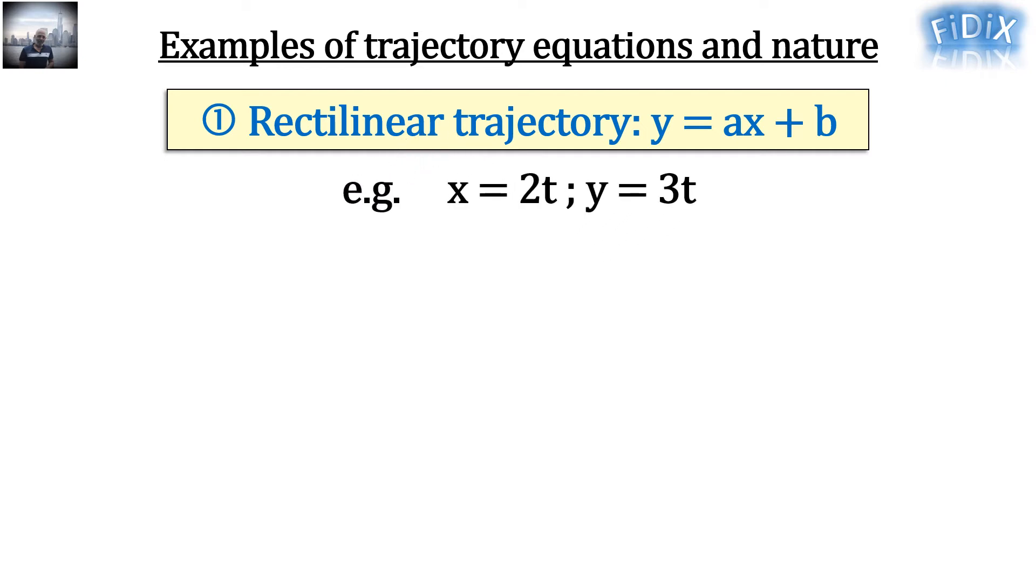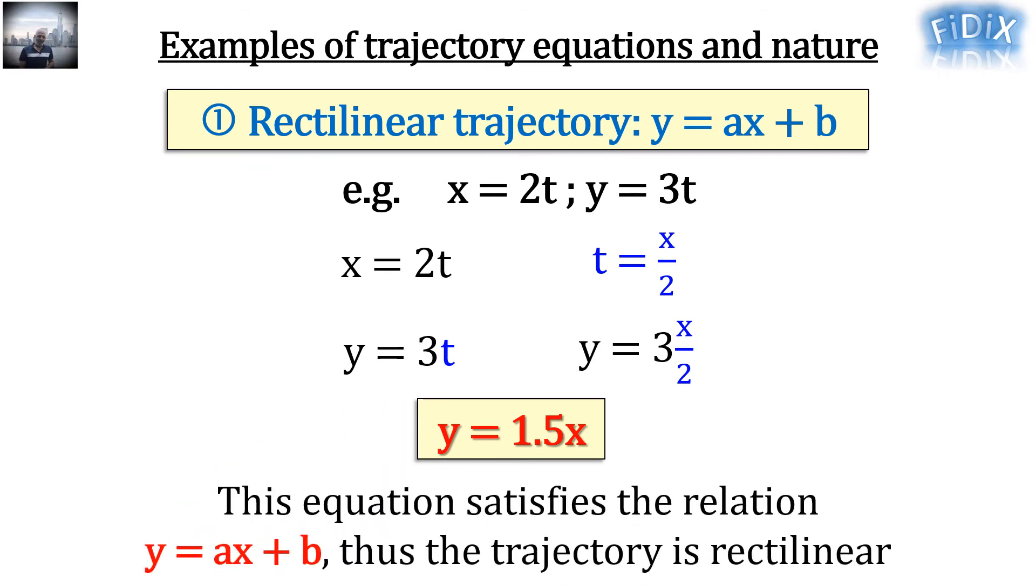For example, if we have a moving point with the following coordinates x equals 2t and y equals 3t, and we are asked to determine its trajectory equation and nature. What we can do is find t as a function of x, then replace t by its expression in the parametric equation of y. In our case we got y equals 1.5x, which satisfies the relation y equals ax plus b. Thus, the trajectory is rectilinear.